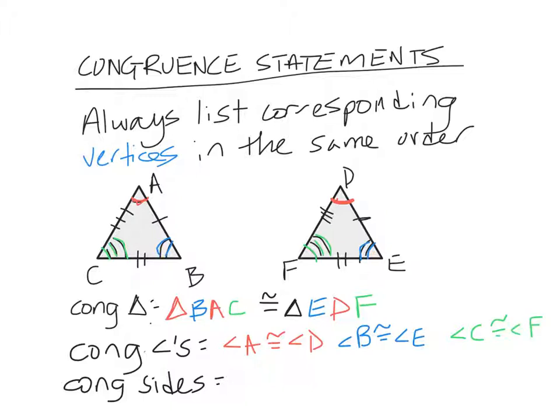And then we'll do the congruent sides. So just like with the triangle part, my sides I need to go in the same order. So I'm going to do AB first. So A is red. B is blue. Which means it's going to be congruent to D is red. E is blue. And I could flip both of those letters if I wanted to.